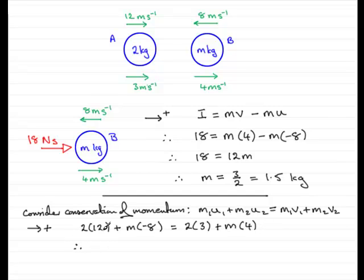Clean this up, and we've got 24 minus 8m equals 6 plus 4m. If we add 8m to both sides and subtract 6 from both sides, we've therefore got 18 equals 12m.